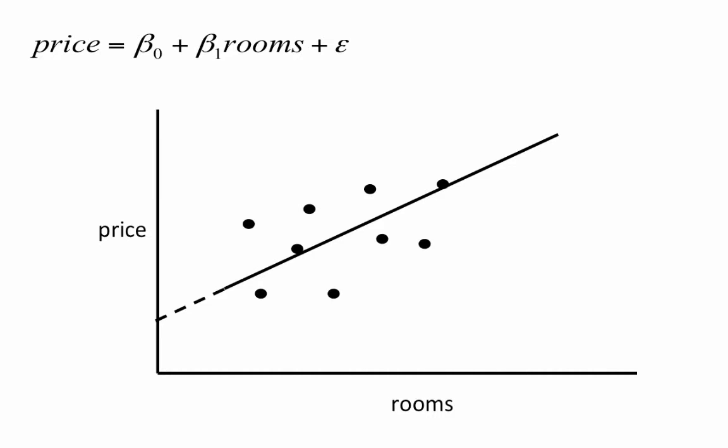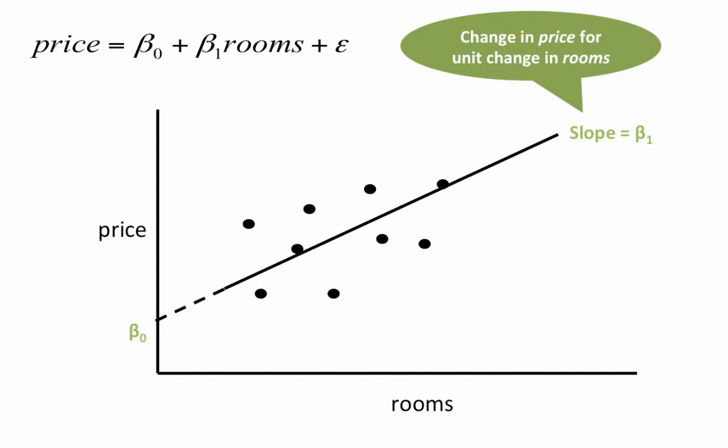Beta 0 represents the intercept, where this line meets the y-axis, and beta 1 is the slope of the line. The slope represents the change in price for a unit change in the predictor variable — rooms. For example, if rooms went from 2 to 3, what is going to be the change in price? The slope represents this change in the target attribute for a unit change in the predictor attribute.